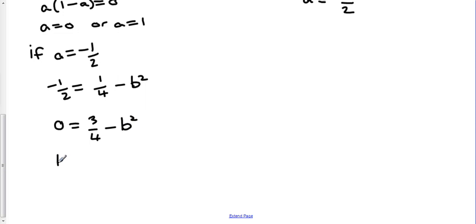Which means that b squared is going to be 3 quarters, which means b is plus or minus the square root of the top and the square root of the bottom. So we've got two possible values of b: root 3 over 2 or minus root 3 over 2.